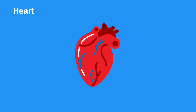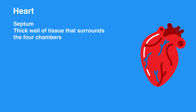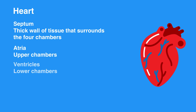The heart is a hollow muscle comprised of four chambers that are all separated by thick walls of tissue called septum. The two upper chambers are the atria, and the two lower chambers are the ventricles.